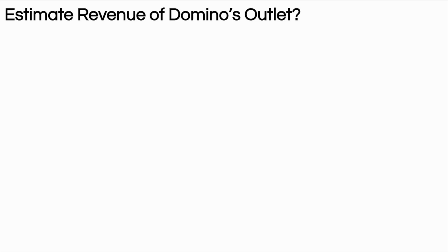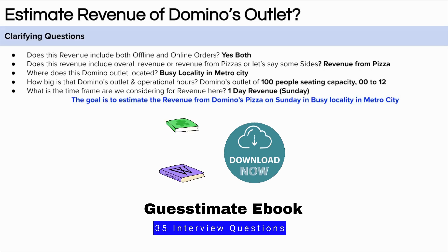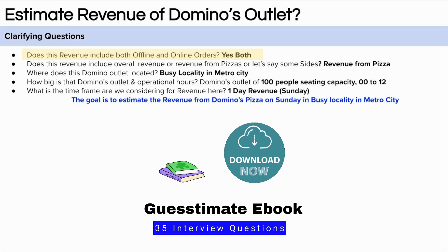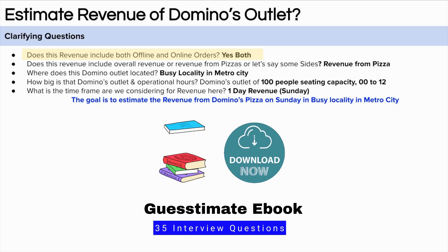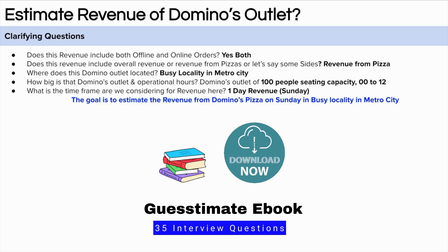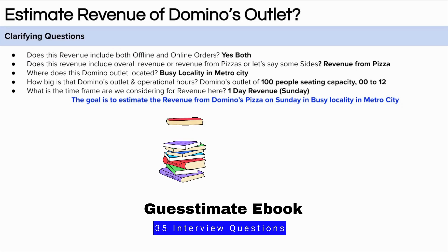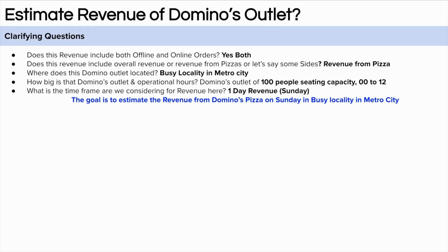First, let's start with the clarifying questions. The first question we can ask is about the revenue source — what are the different sources of revenue being attributed here? Because nowadays people can order online or go to the outlet and dine there. So are we considering only online orders or offline orders? Let's assume we are not bounded by any such constraint — both offline and online orders are being considered.